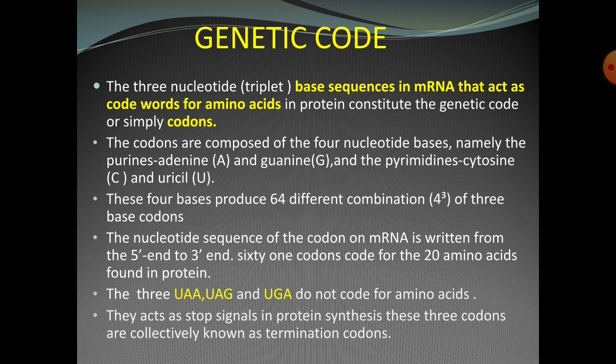These four nucleotide bases — adenine, guanine, cytosine, and uracil — in mRNA are used to produce three-base codons. There are 64 codons for the 20 amino acids, and since each codon codes for only one amino acid, that means more than one codon can code for the same amino acid. The nucleotide sequence of codons on mRNA is written from the 5 prime end to the 3 prime end. 61 codons code for the 20 amino acids found in proteins.